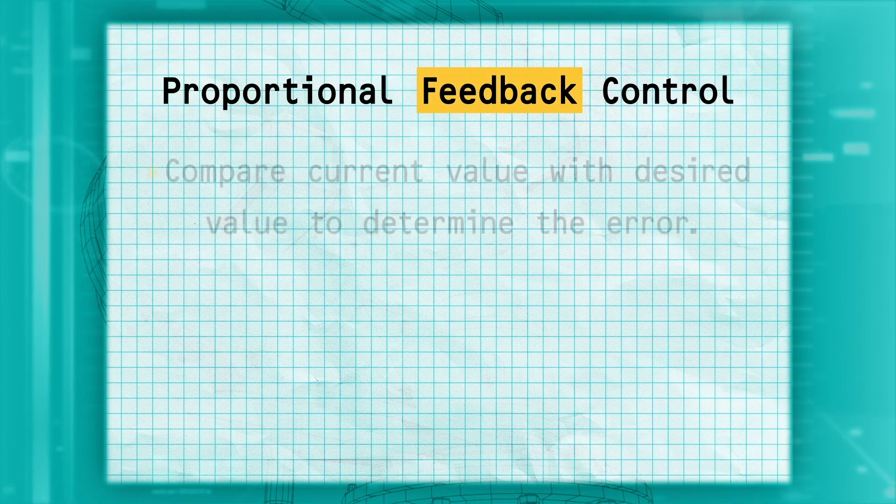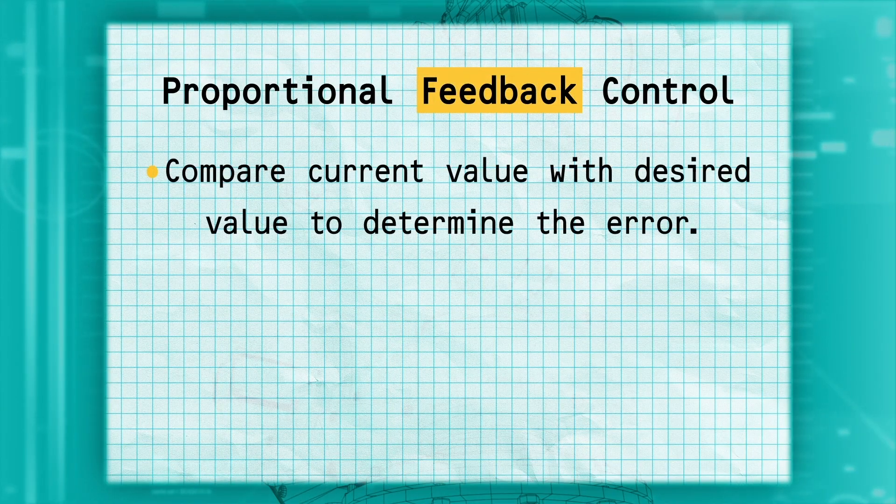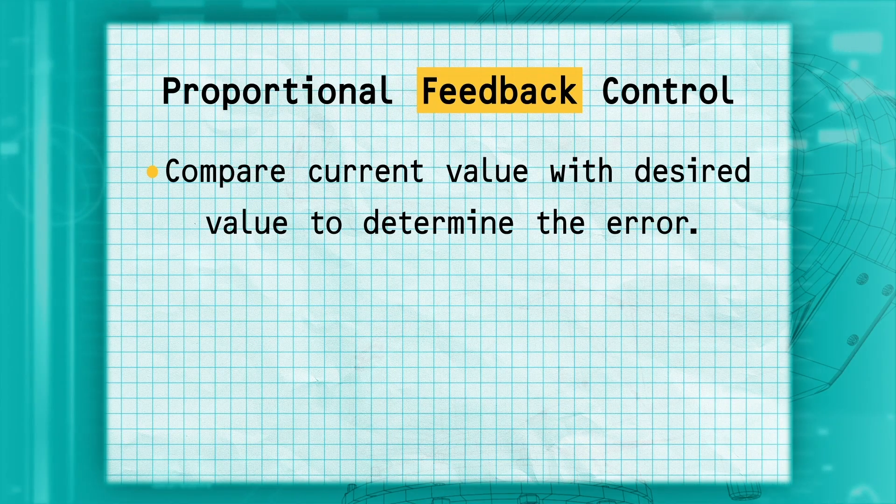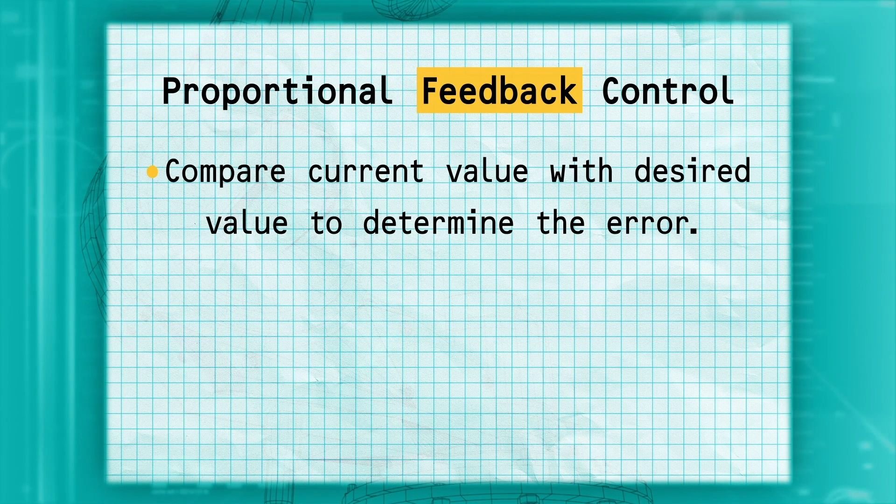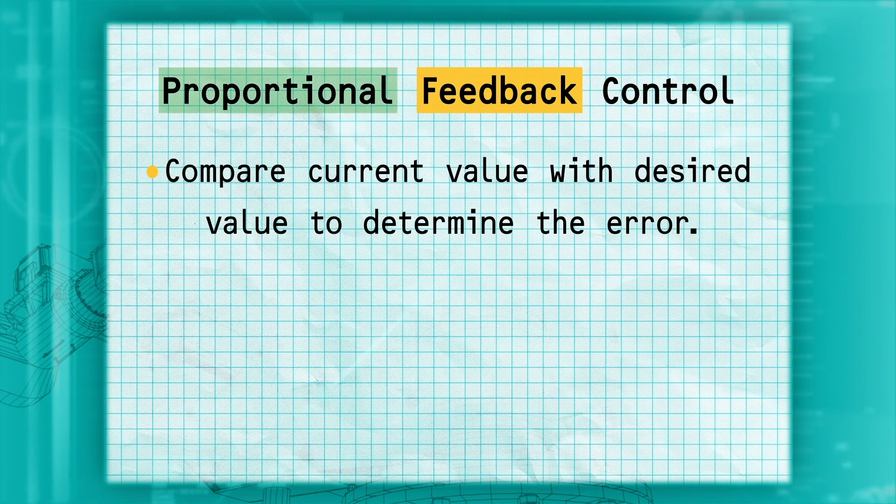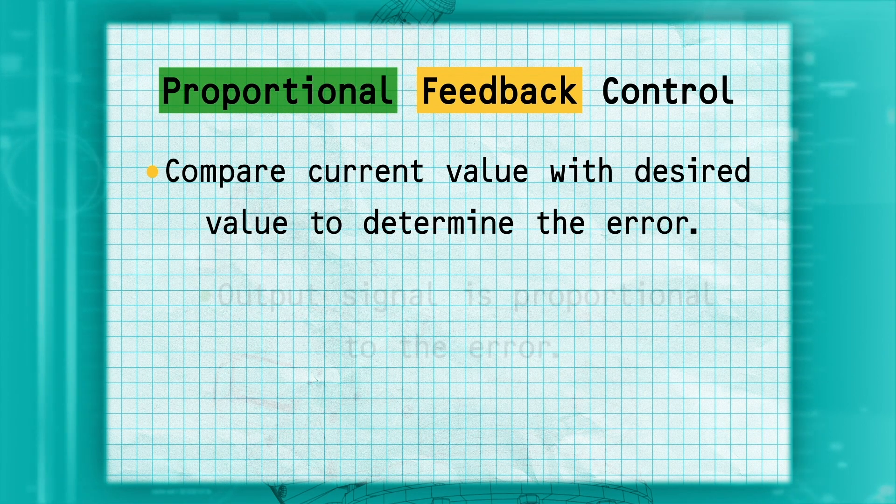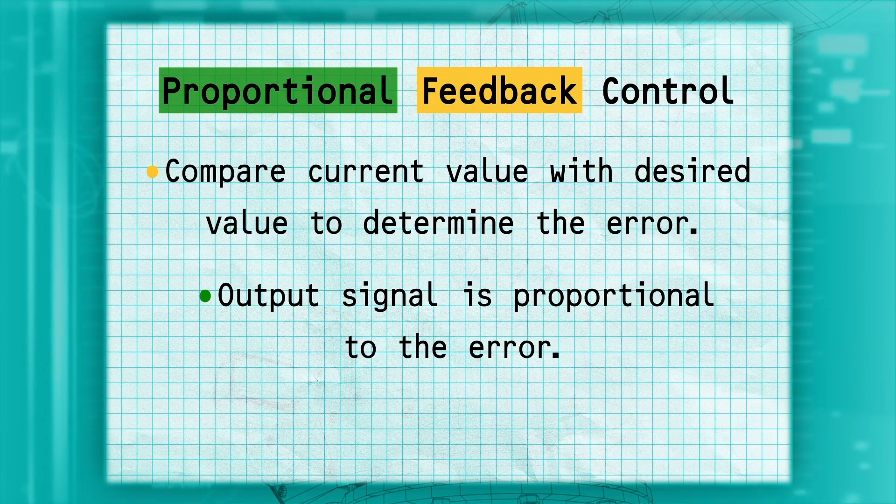Feedback means that it compares the desired value with the current value to find the error. It feeds back the current value to find a new value. It's called Proportional Control because the output signal is proportional to the size of the error.